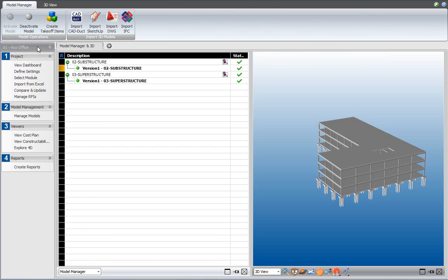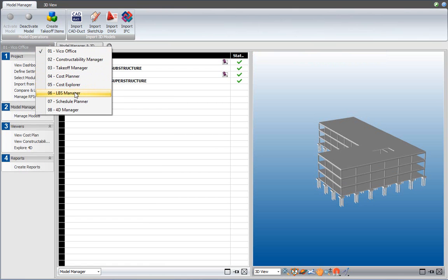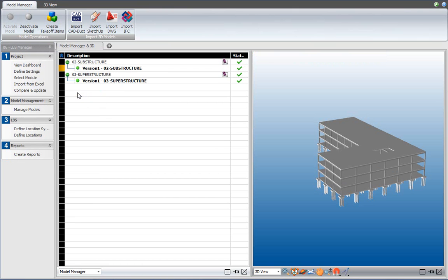I will now go into the LBS Manager. I select the LBS Manager workflow palette, and I select the Define Locations workflow item.